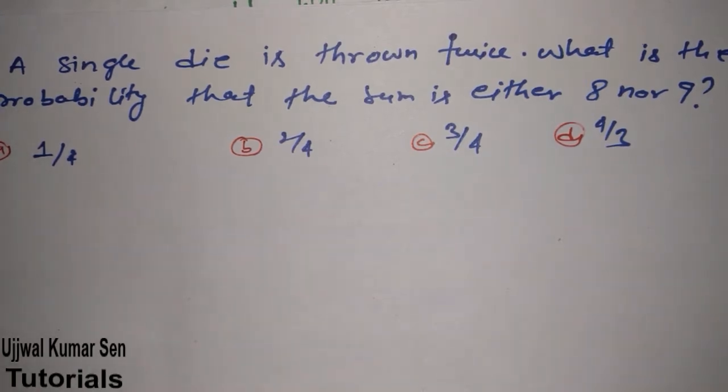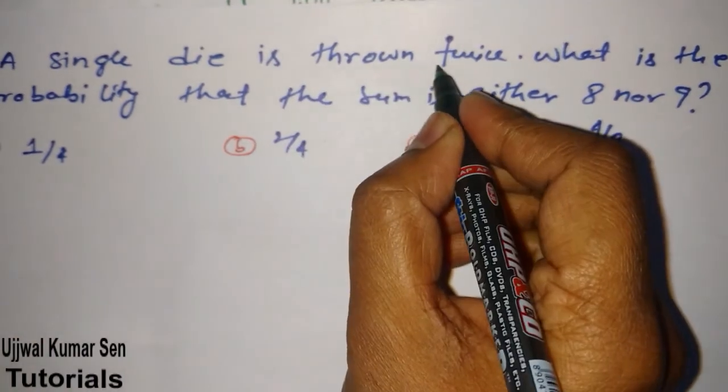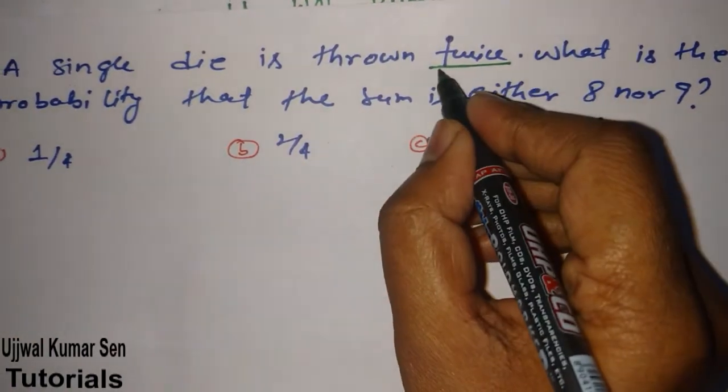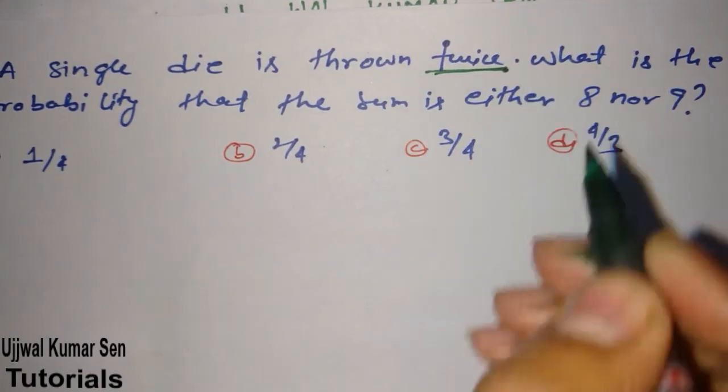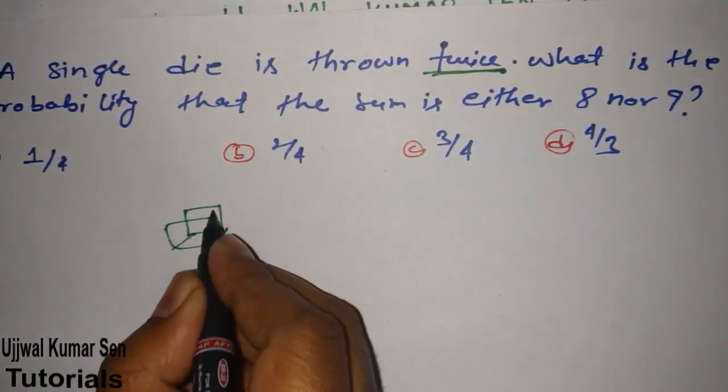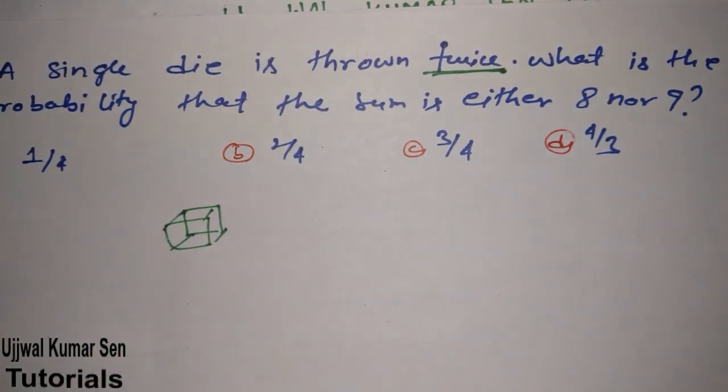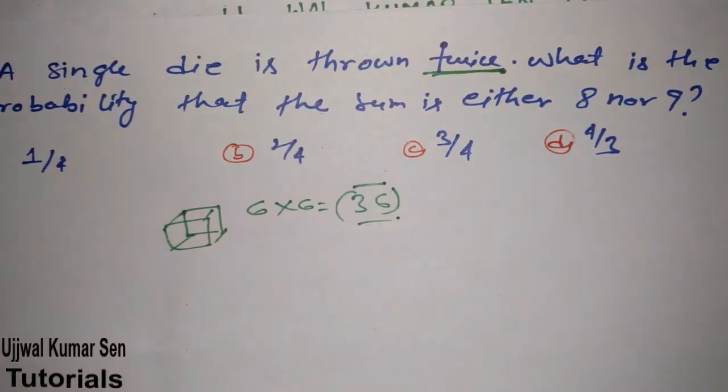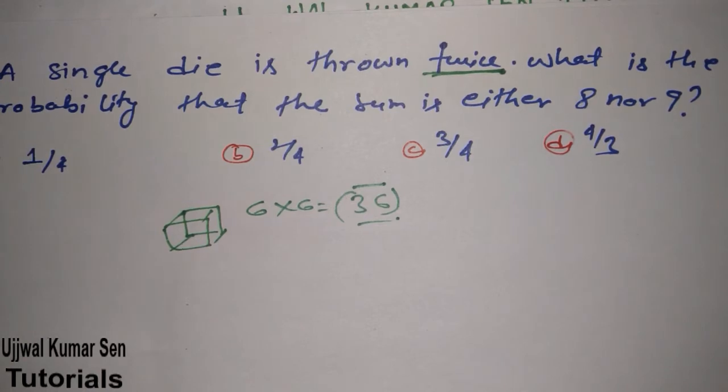They are throwing this die twice. So one die is having how many faces? You know that - six faces, right? So six multiplied by six is equal to 36. So the total number of possibilities for this case is 36. Remember that.